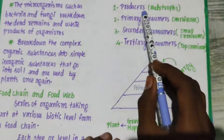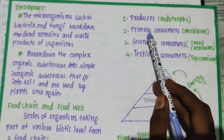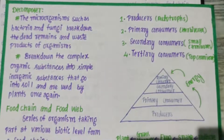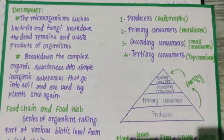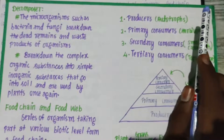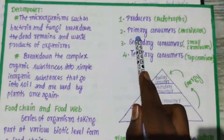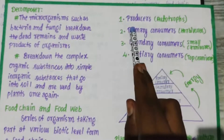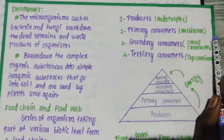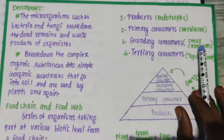The first level is producers. Producers are autotrophs, so they produce their own food — that is why they are autotrophs. Green plants and some bacteria are producers. Producers are consumed by primary consumers. Primary consumers are herbivores because they depend on plants only.